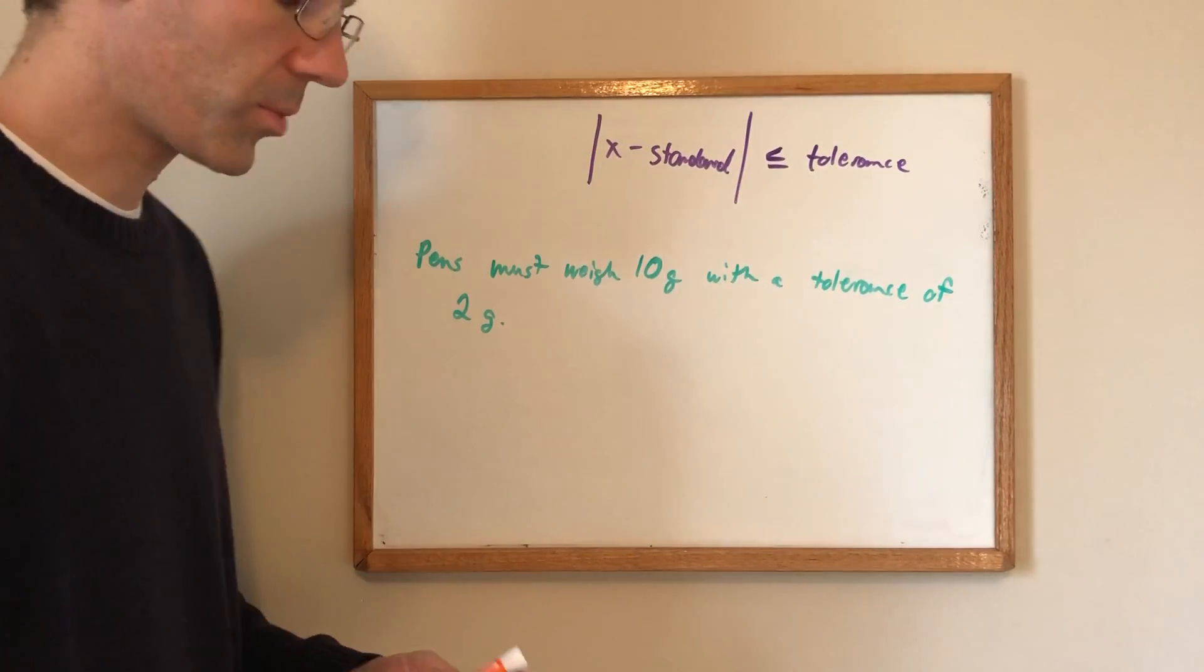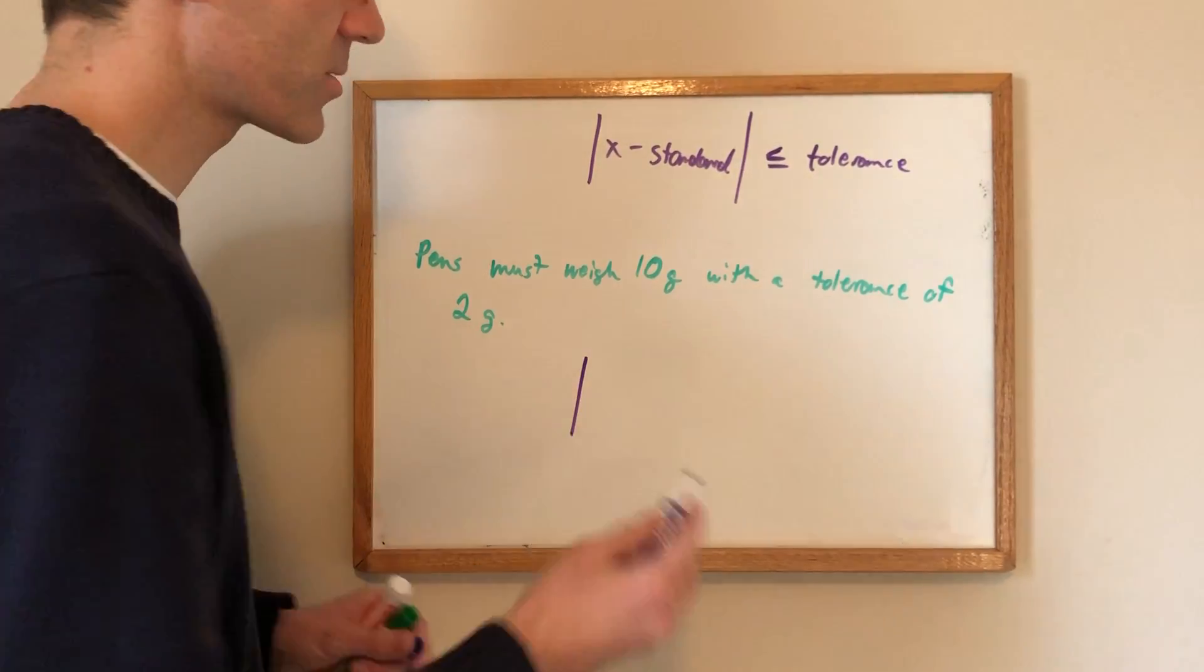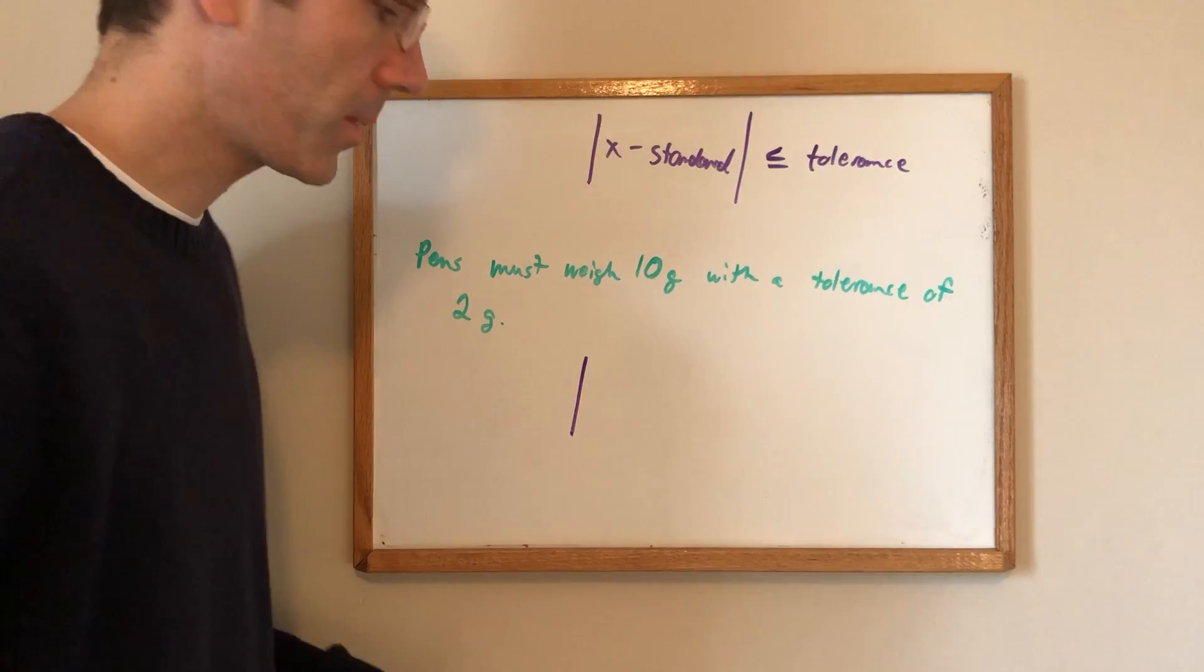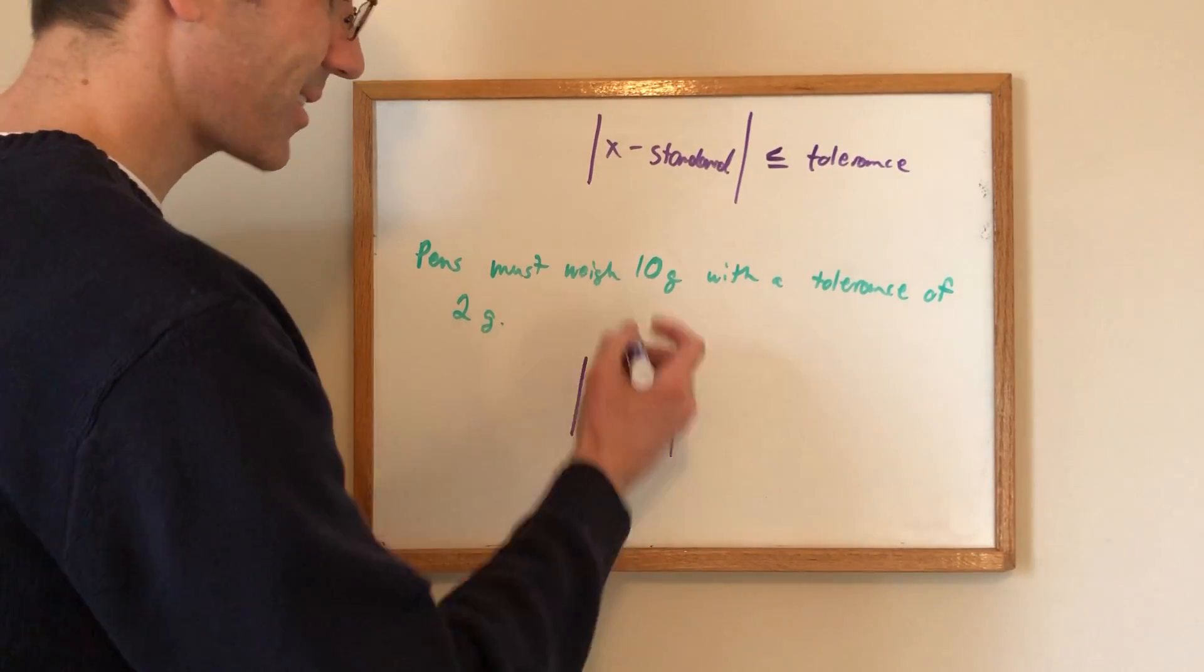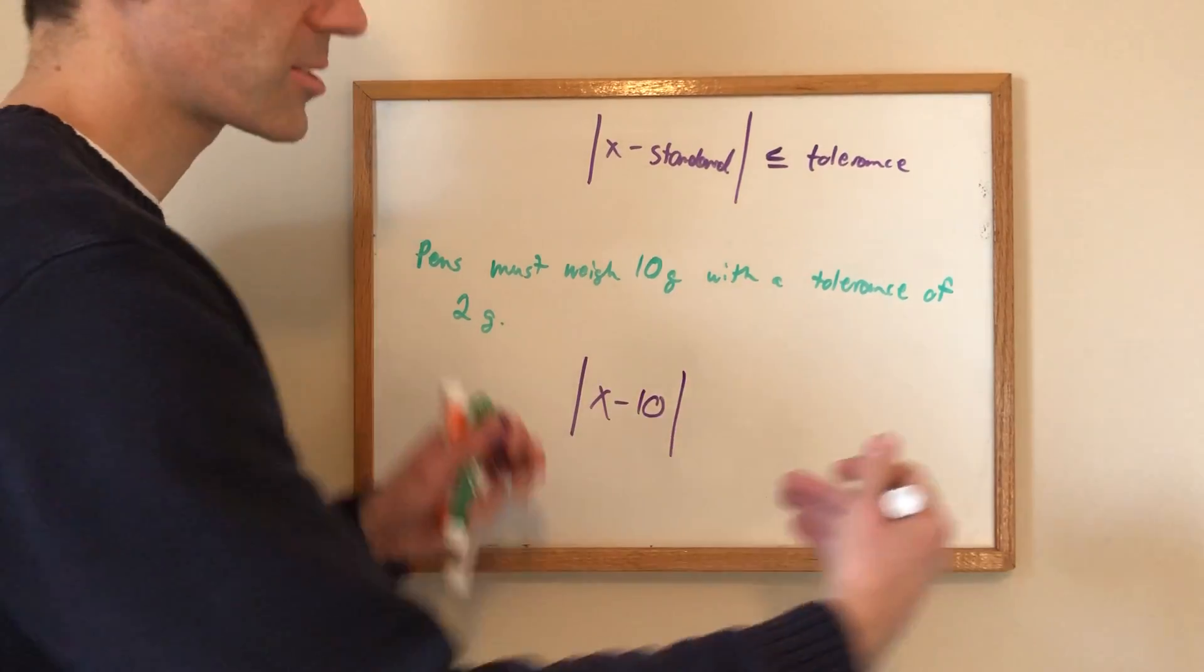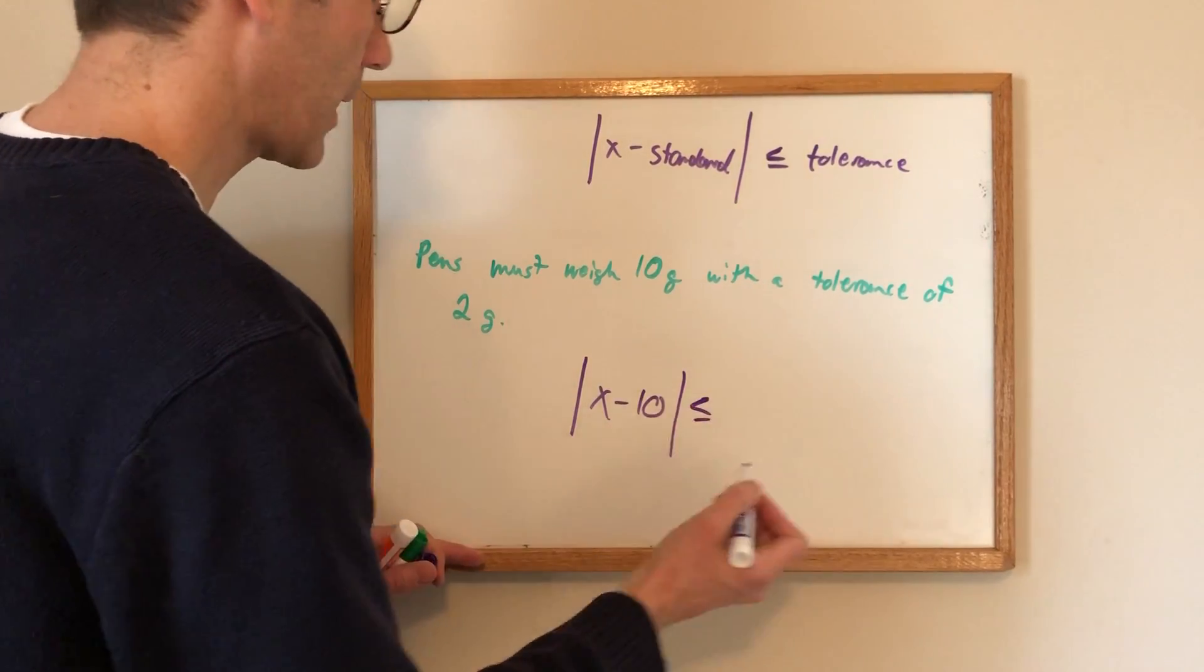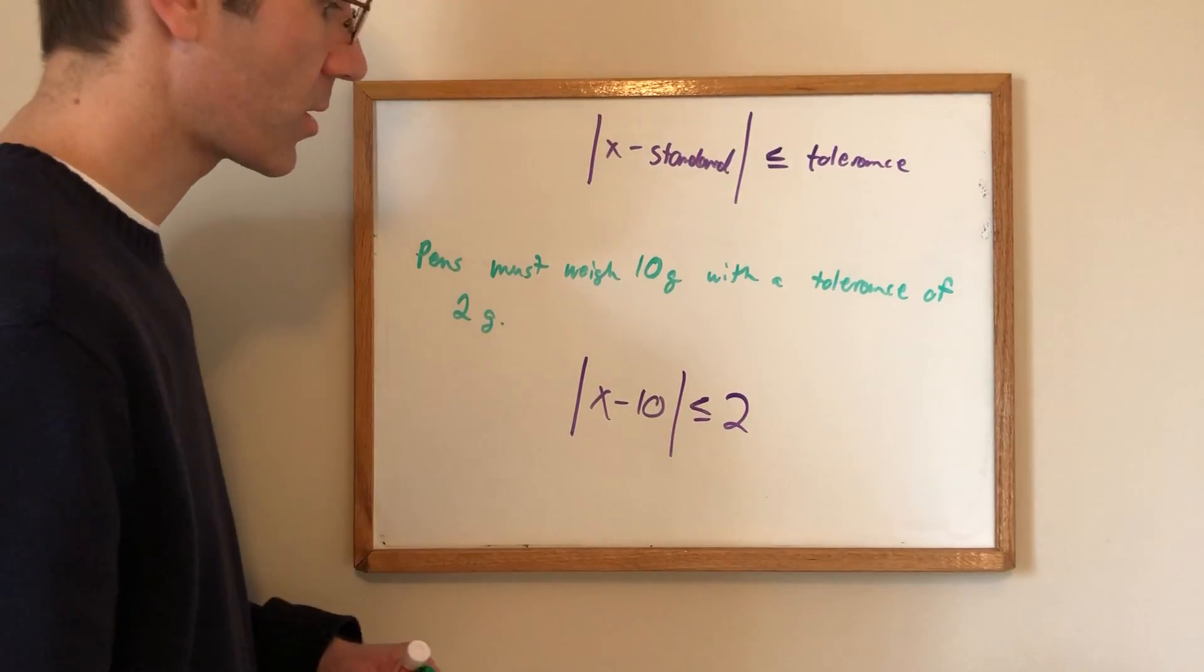Now we could go through the whole trial and error process but let's not because we know what we're doing. So the weight of a pen is going to be x so x minus always minus the standard is 10 and it's going to be within a certain range so it's less than which is and, and 2 right there and if you were to solve it it would actually work and very quickly I'm going to show you that.